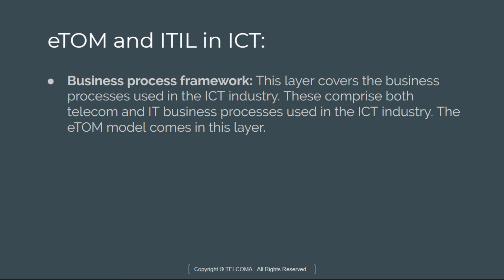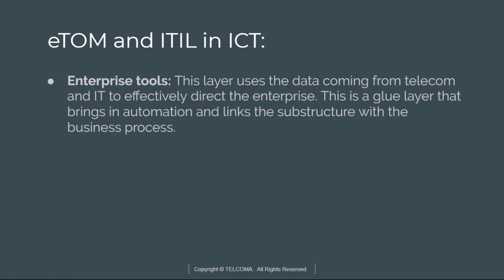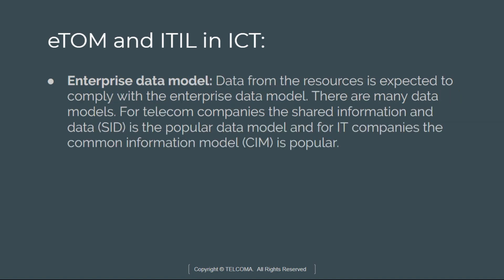The business process framework layer covers the business processes used in these industries. It comprises both telecom and IT business processes used in the ICT industry. The enterprise tools layer uses data coming from telecom and IT to effectively direct the enterprise. This is a glue layer that brings in automation and links the infrastructure with the business process.